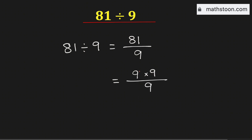So we can cancel one 9, and we are left with 9. Therefore 81 divided by 9 is equal to 9, and this is our final answer.